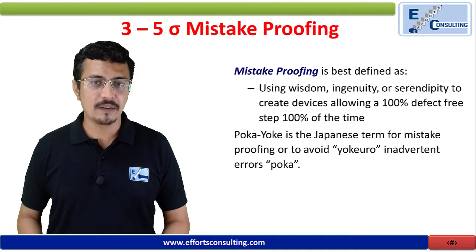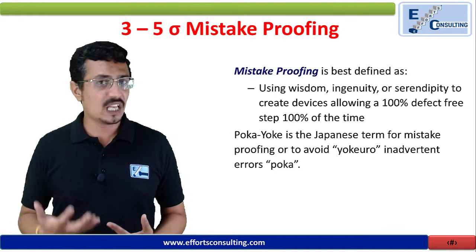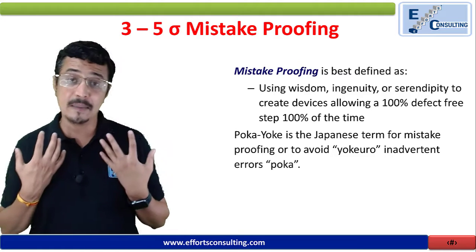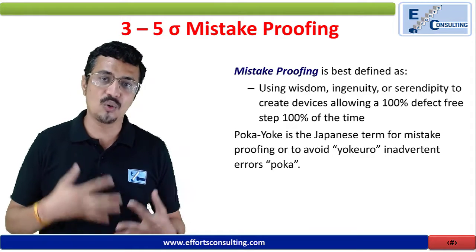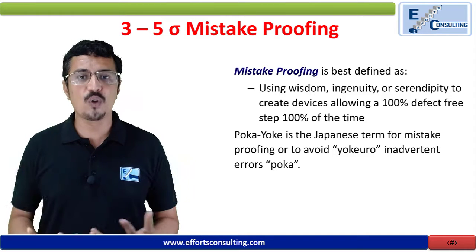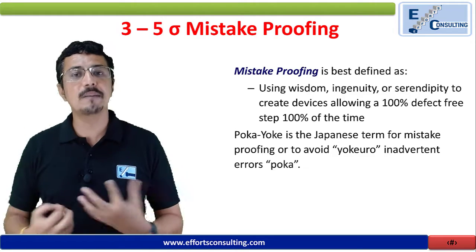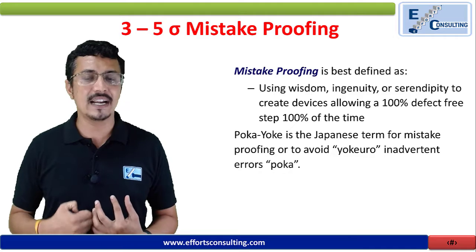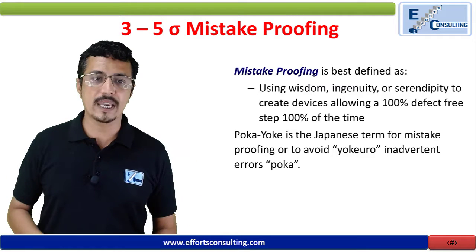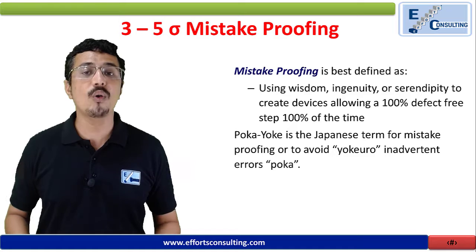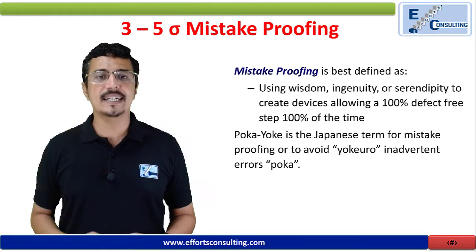What is mistake proofing? Mistake proofing is also called poka-yoke in Japanese, and it came from there. Japanese are very well versed with mistake proofing and they believe that before we get any kind of symptoms, let us plug the causes right there. Using your wisdom when creating devices, you create a hundred percent defect-free environment — preventing defects one hundred percent of the time. Poka-yoke means inadvertent errors, and yoke means to stop those errors.